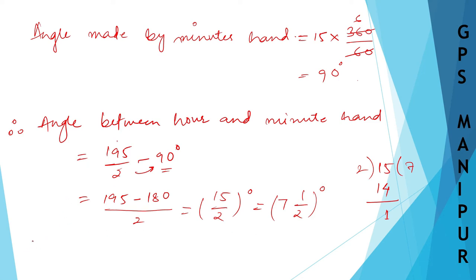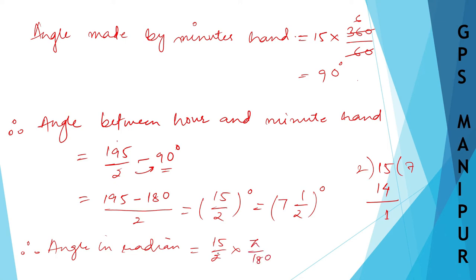Now let us convert this into radians. Angle in radians = 15/2 × π/180. Simplifying: 15 cancels with 180 to give 12, and with 2 gives 24. So the angle in radians is π/24.